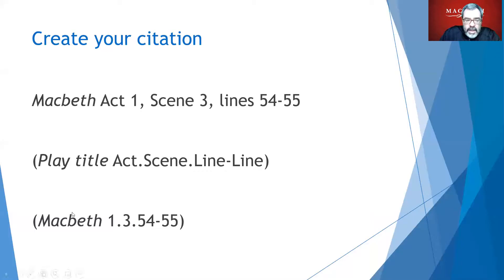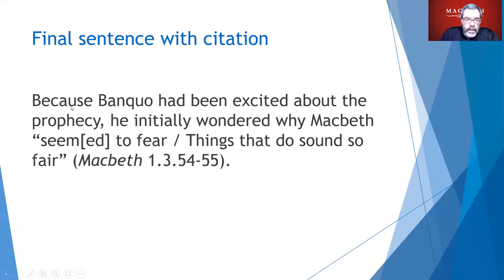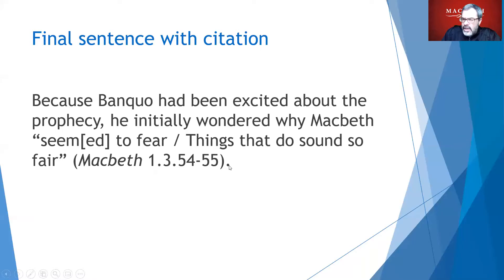Here's how it looks: play title 'Mac.' followed by a period and space, then the act number followed by a period, then the scene number followed by a period, then the line numbers with a dash — for example, (Mac. 1.3.54-55). Here's how everything looks together: 'Because Banquo had been excited about the prophecy, he initially wondered why Macbeth seemed to fear / things that do sound so fair (Mac. 1.3.54-55).' Note the parentheses and that the period ending the sentence goes outside of the parentheses.